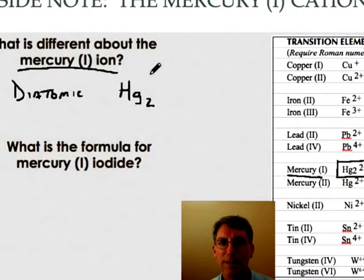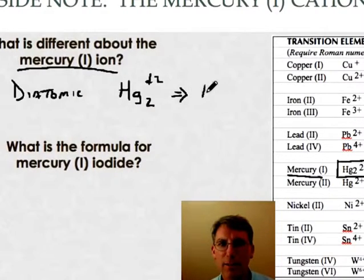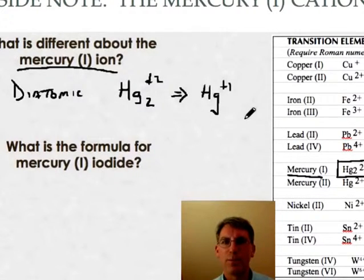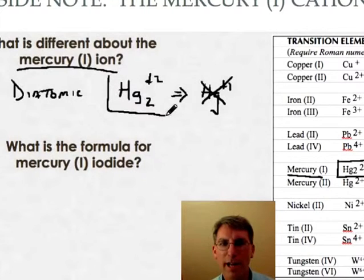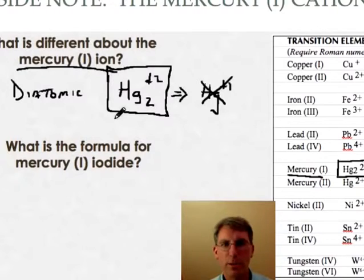So each individual mercury must have a plus one charge. But this never gets written. We always write it as two mercuries put together. It's a little strange, but you'll get used to it.